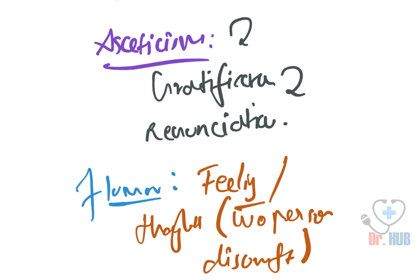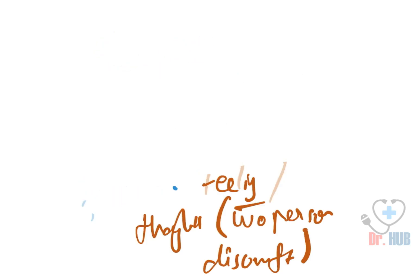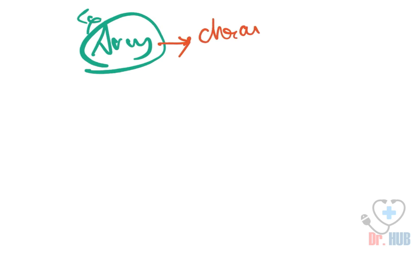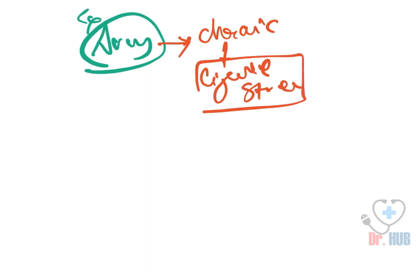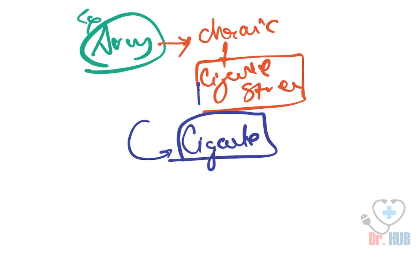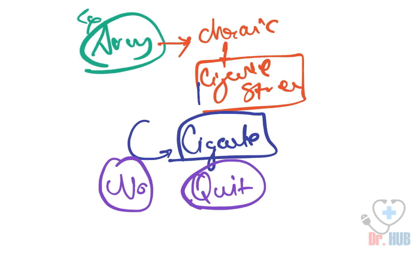An example of humor: there is an army with some chronic smokers who smoke cigarettes due to stress. During a severe war, one person offers a cigarette and the other says 'No, it's not for me — I'm trying to quit.' This is a kind of humor.